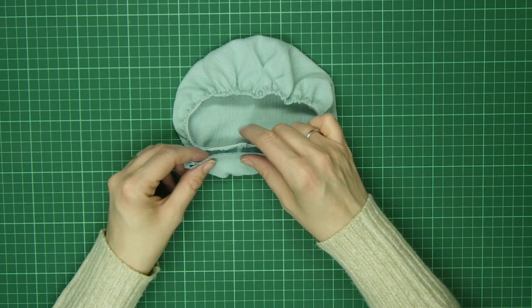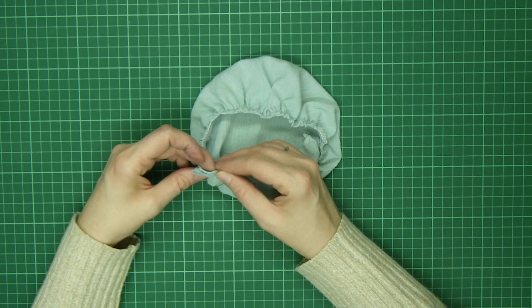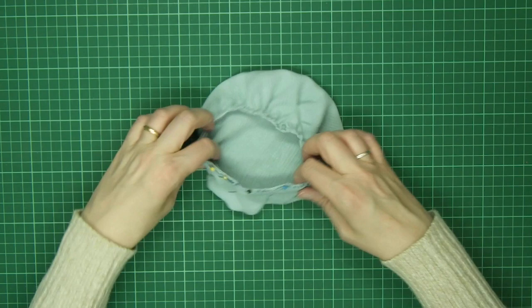And we're going to sew that right sides together onto the outside of the bonnet. It doesn't matter where because it's a round bonnet. So just pin the inner curve to the elasticated edge of the bonnet like this. And then we're going to sew back all the way around the edge.